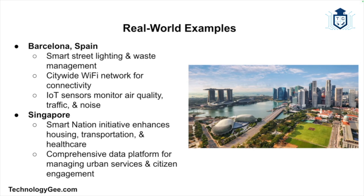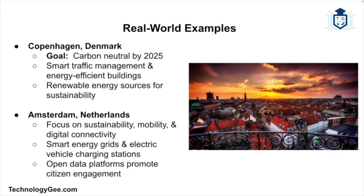Several cities around the world are leading the way in smart city initiatives. Barcelona has implemented smart street lighting, waste management, and citywide Wi-Fi networks, using IoT sensors to monitor air quality, traffic, and noise levels. Singapore's Smart Nation initiative focuses on using technology to improve urban living — including smart housing, transportation, and healthcare — and employs a comprehensive data platform to manage urban services and engage citizens.